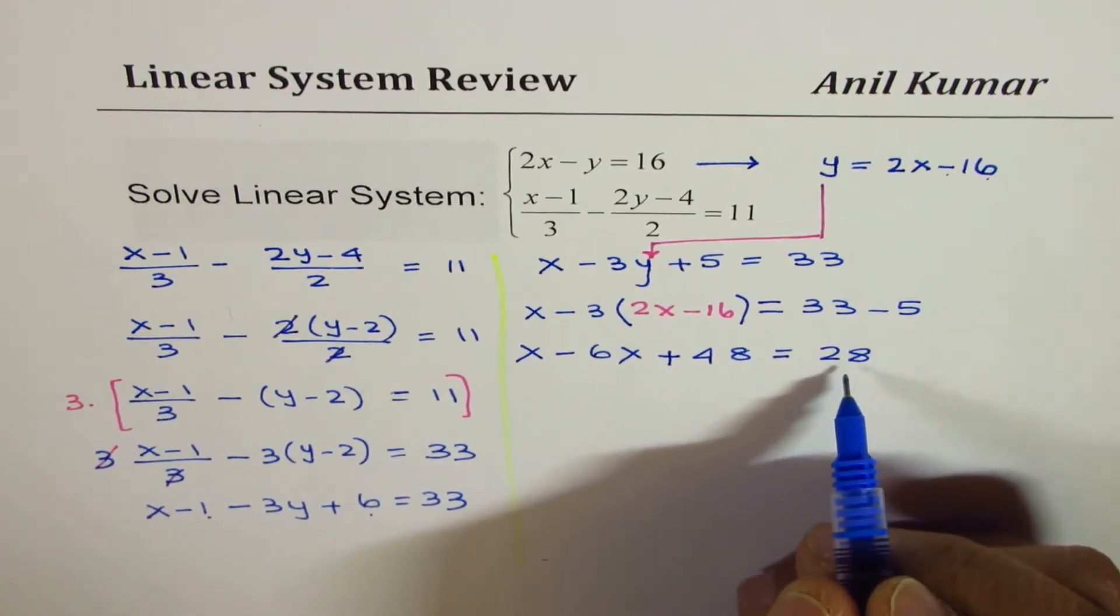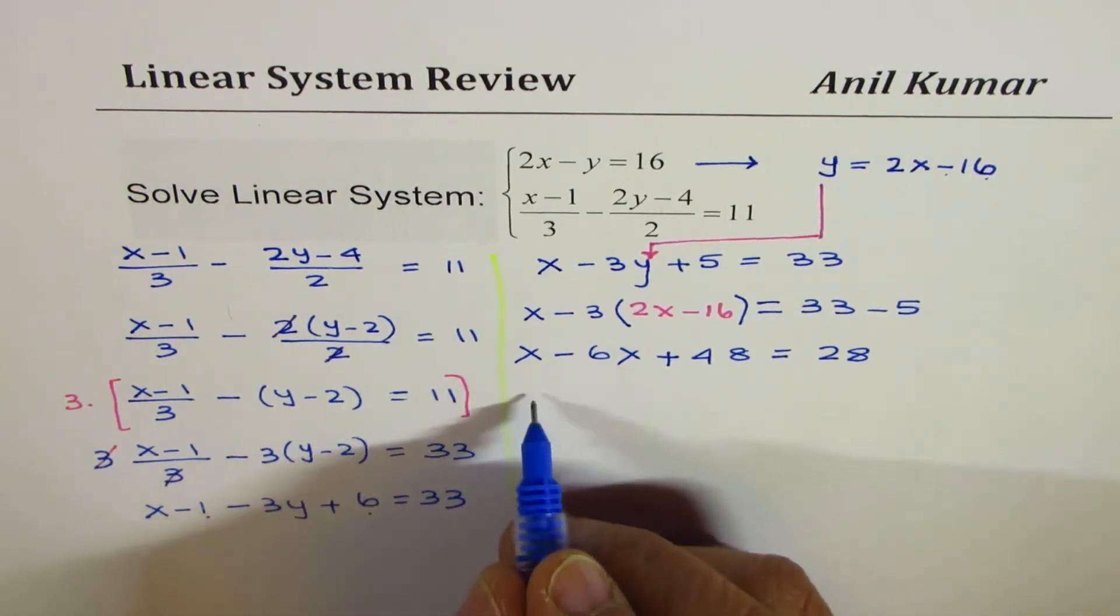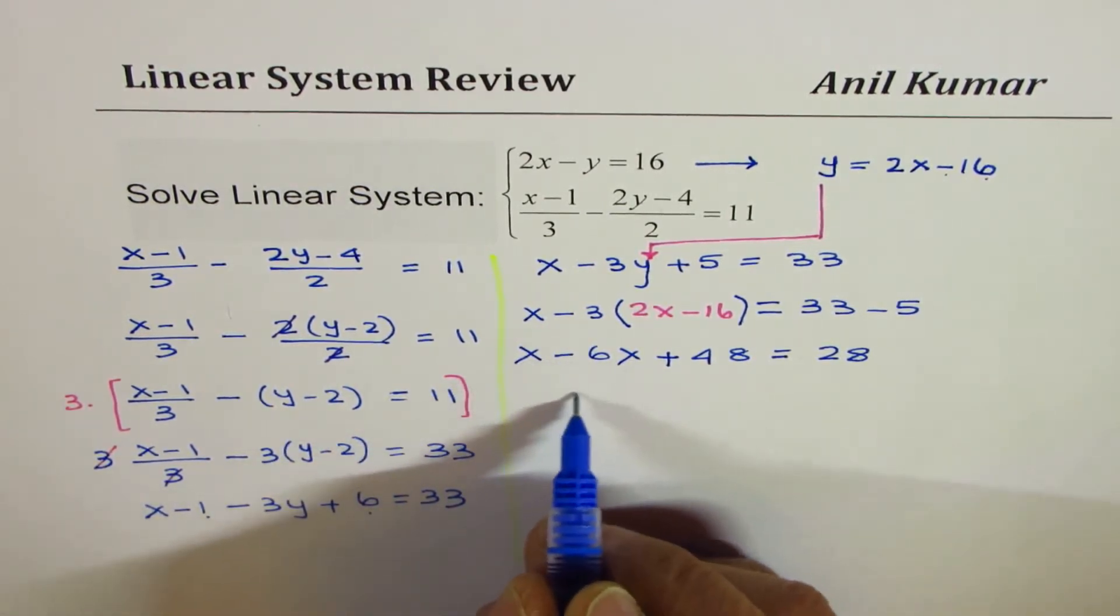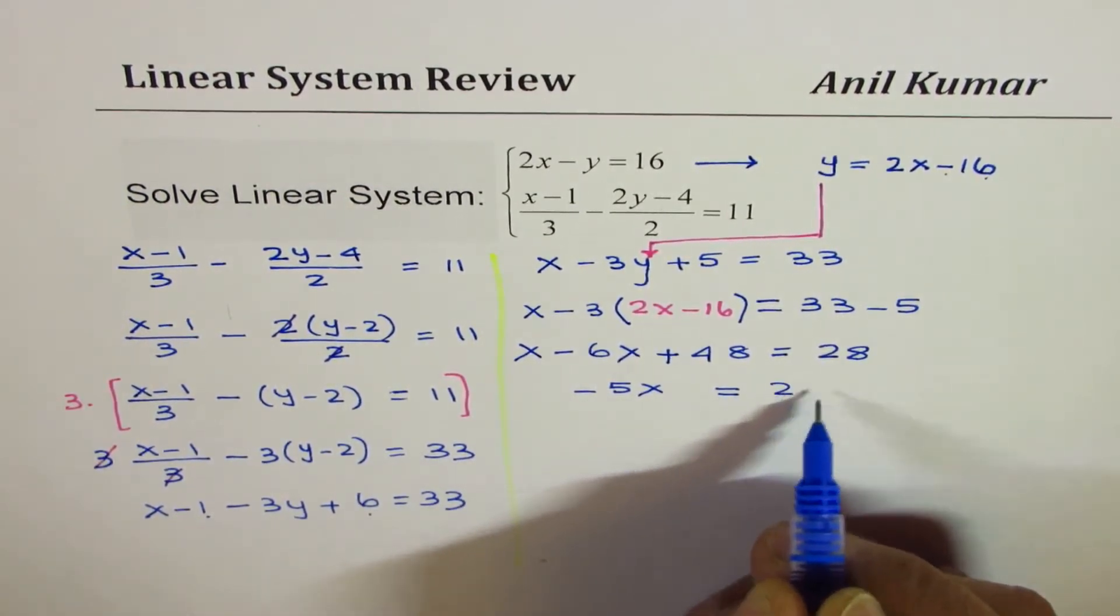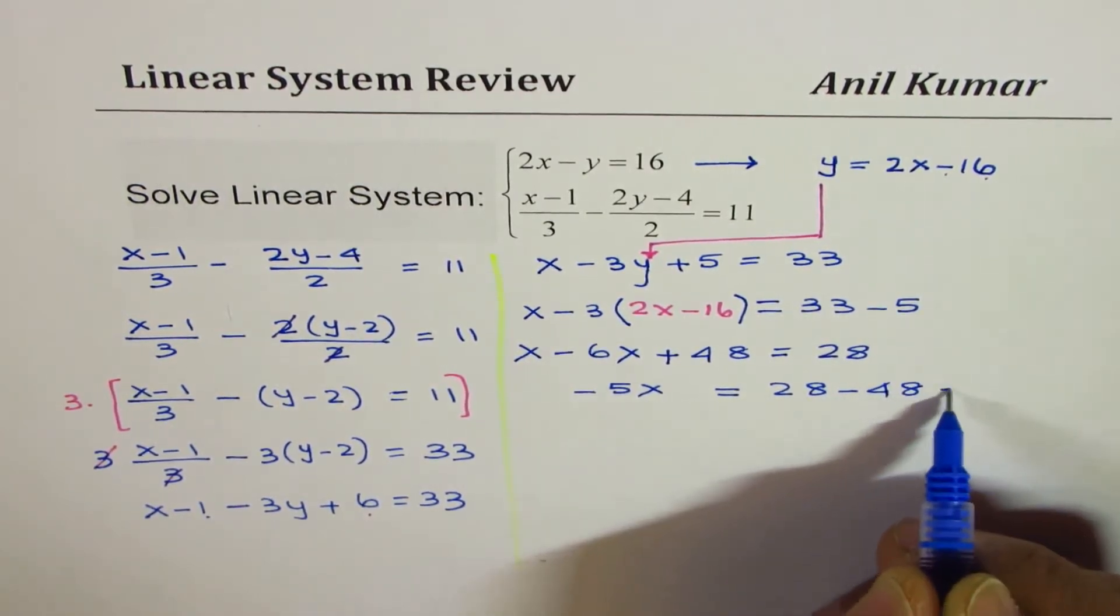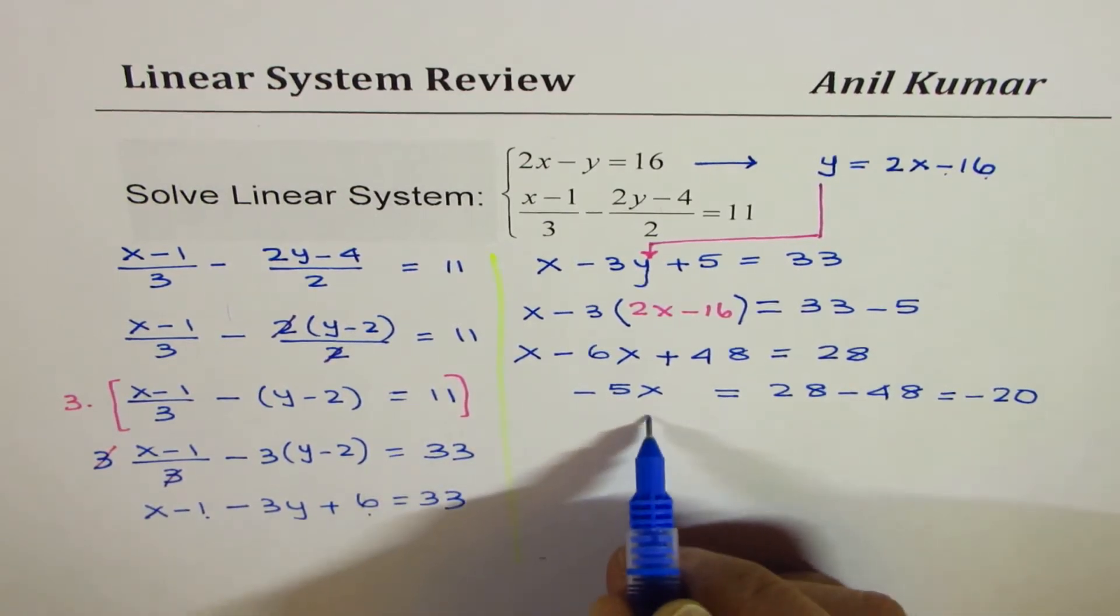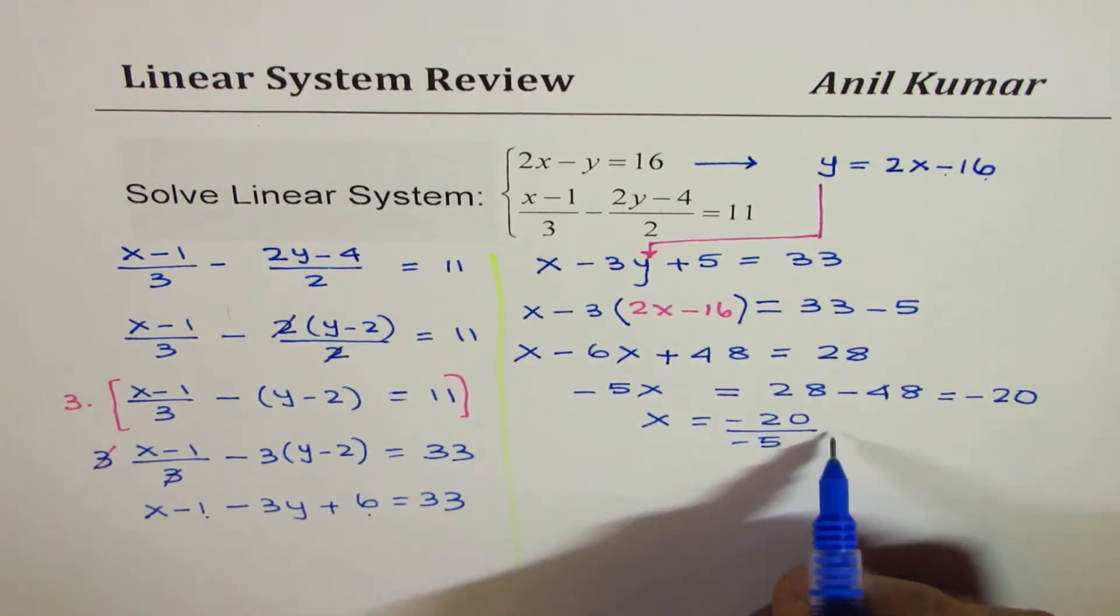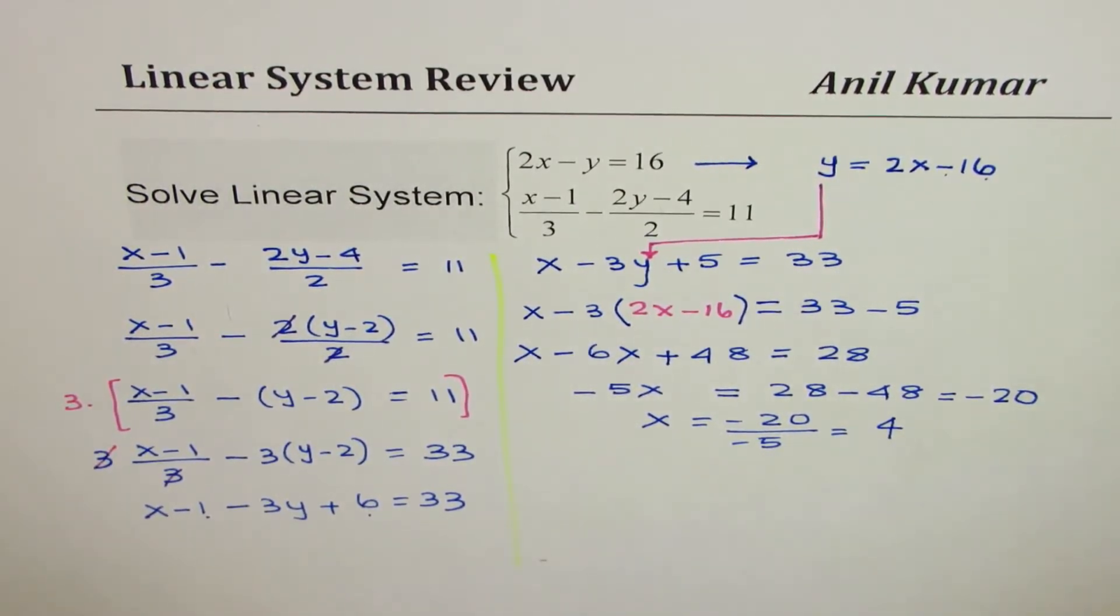Now we can bring the constant 48 to the right side and combine these two terms, which gives us minus 5x equals 28 minus 48. 28 minus 48 is minus 20. Dividing by minus 5, we get x equals minus 20 divided by minus 5. That gives us 4. So the value for x is 4.